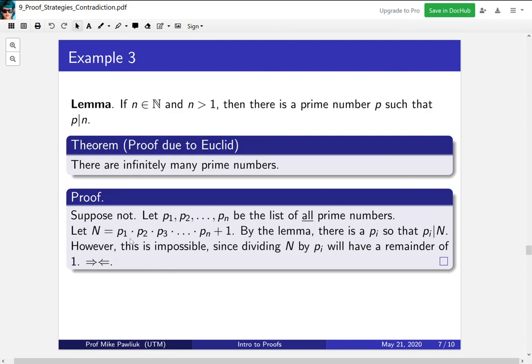Because it's a product of a bunch of things, including pᵢ, and then plus one. So this is a contradiction. You can't have pᵢ both divide and not divide N.